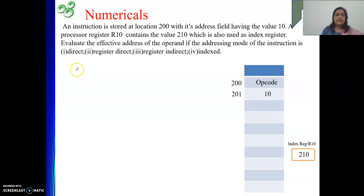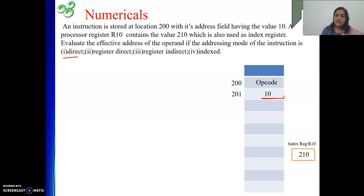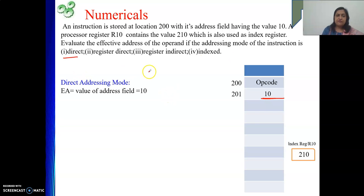First, direct mode: address is part of the instruction, so it is in the address field with value 10. This 10 represents the address of the operand — so the effective address is 10. In direct addressing mode, the effective address equals the value of the address field, which is 10.